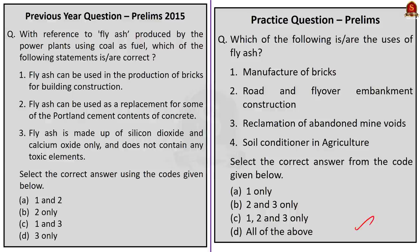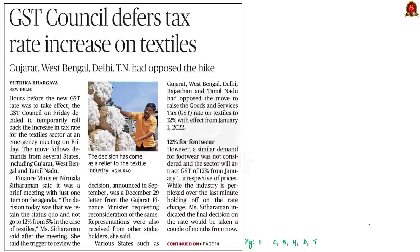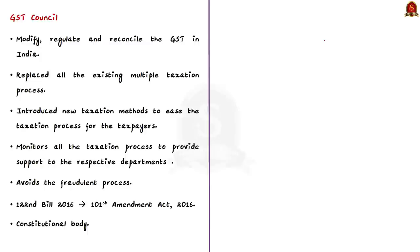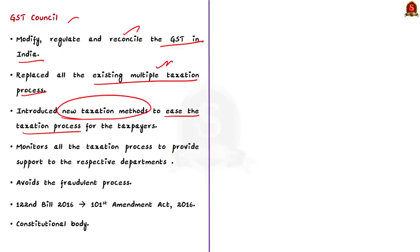Let us now take up the next news article. This article is with reference to the decision of the GST Council to temporarily suspend the increase of GST rate on textiles. Earlier, it was decided to increase the GST rate on textiles from 5% to 12%. In this context, we will learn about GST Council and its functions. The Government of India introduced the GST Council to modify, regulate and reconcile the Goods and Services Tax in India. The council replaced all the existing multiple taxation processes and introduced new taxation methods to ease the taxation process for taxpayers.